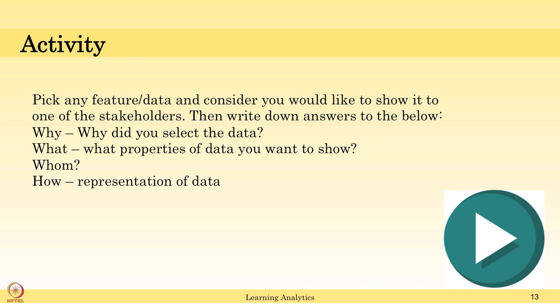Pick any feature or data and consider you would like to show it to one of the stakeholders. You remember the stakeholders — as a researcher, consider reporting to other stakeholders like a funder, the students, the teacher, or someone developing educational learning environments. Consider any stakeholder and write down answers to these questions: Why did you select this particular data? Why do you want to show this data to that particular stakeholder? Which stakeholder are you picking? Because based on the stakeholder, what data you want to show and what properties of the data will change. How do you want to represent it — in a table, text format, or as plots or graphs?